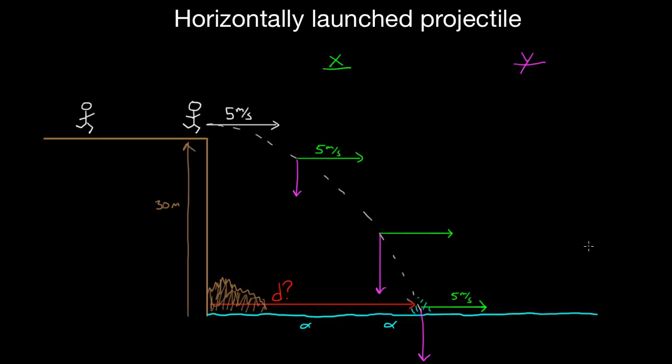So how do we solve this with math? Let's write down what we know. Horizontally, this person started off with an initial velocity — V-naught in the x — of five meters per second. We don't know anything else in the x direction. You might think 30 meters is the displacement in the x direction, but that's a vertical distance. This horizontal displacement in the x direction is what we want to solve for, so I'm going to write that there as our unknown.